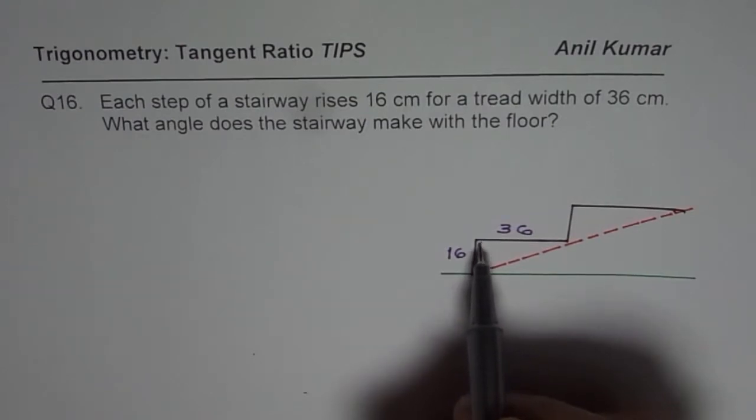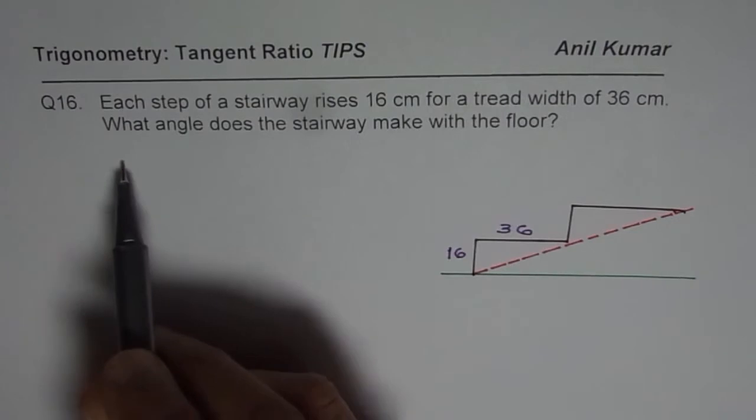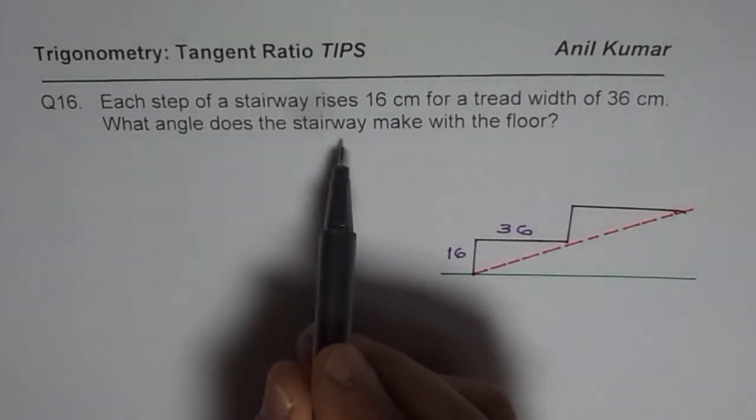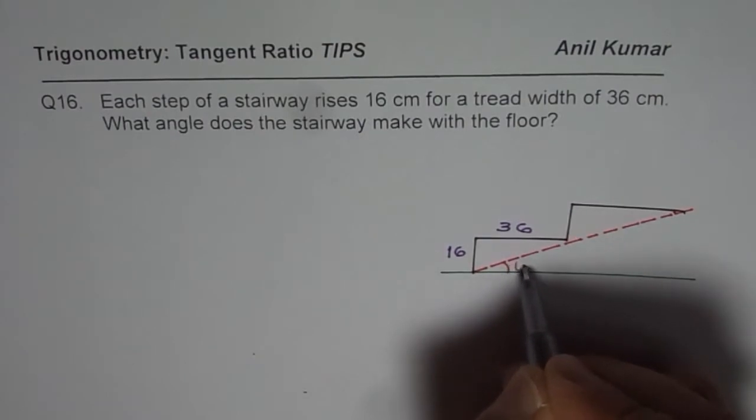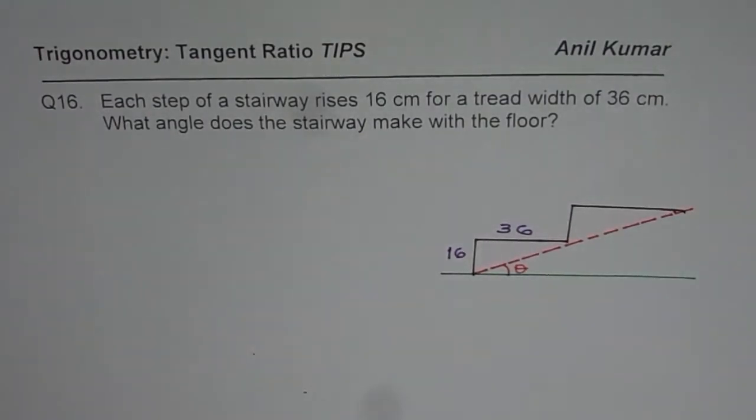Rise is 16 and the width is 36. We need to find what angle does the stairway make with the floor? So that means this is the angle theta which we need to find. You can pause the video, answer the question and then look into my suggestion.